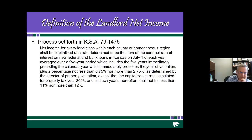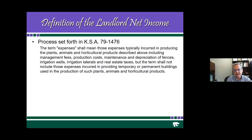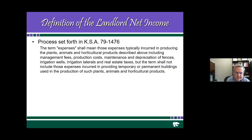Last week Robin talked a little bit about cap rates and rent-to-value rates in the market — that same 11 to 12%. Expenses are those typically incurred in producing the plants, animals, or products. They do include management fees. All of the variable production costs paid by the landlord are included, such as maintenance and depreciation on fences. But if seed or fertilizer is shared, that would be deducted from the income.